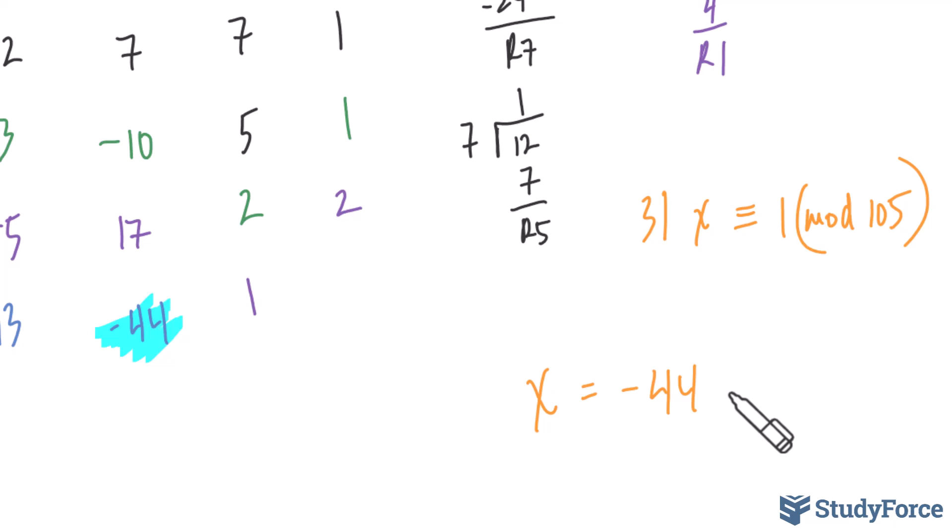So applying the same logic from question number 1, we know that we can find other x values by taking what we know, which is negative 44, and adding to that k times 105. So if I set k to 1, I end up getting an x value that is equal to 61. And that is the first positive integer that makes the congruence true.